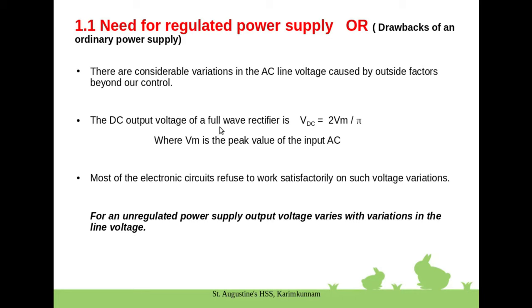The DC output voltage of a full wave rectifier is VDC = 2VM / π, where VM is the peak value of the input AC. Since the AC line voltage varies, the transformer secondary voltage varies, and therefore VM varies — causing DC output voltage variation. Most electronic circuits refuse to work satisfactorily under such voltage variation.